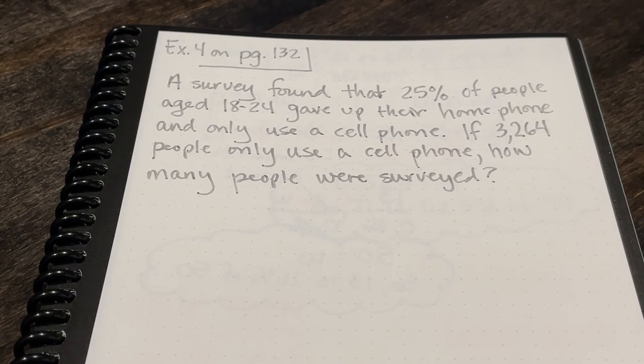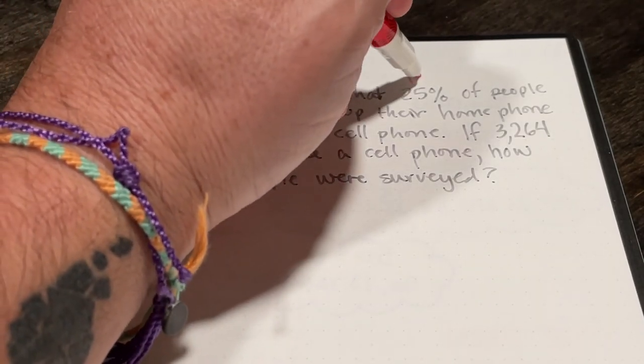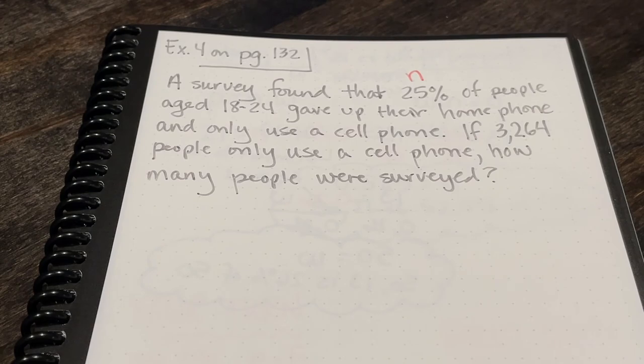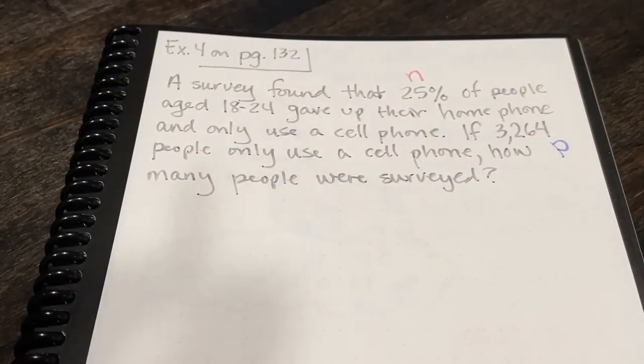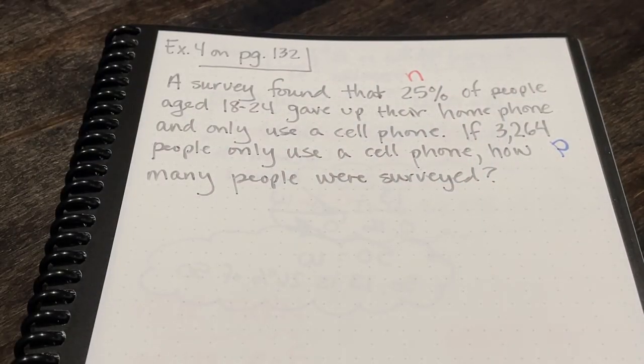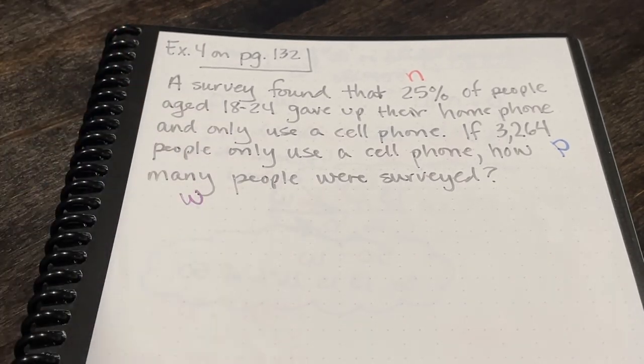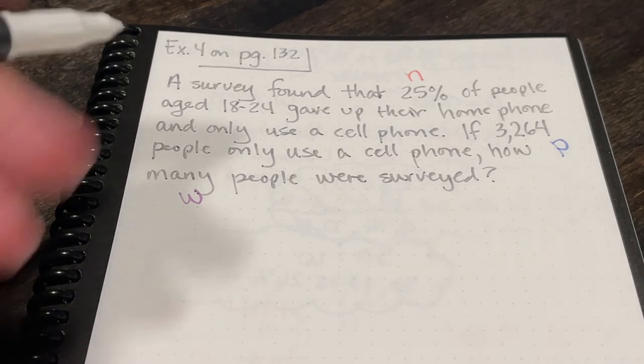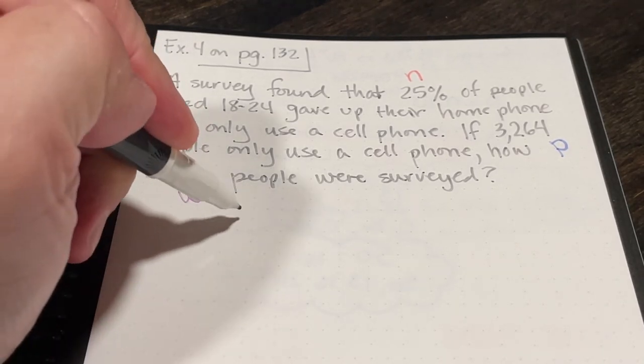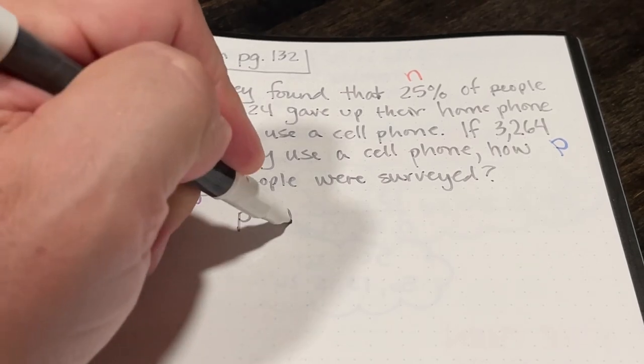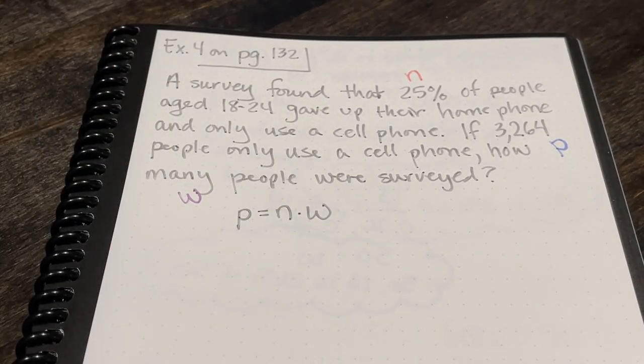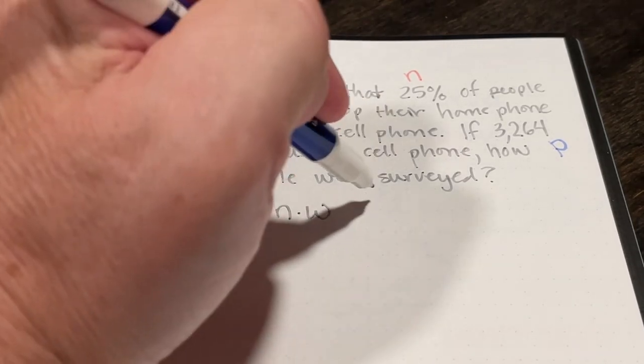In example 4 on page 132, what I want to be able to do is to pick out the percent, the part, and the whole in all of these words. Well, the percent's easy. It's 25%. Now, the number 3,264 is the part because those are the people that said that they only use a cell phone. What we want to find out is how many people in total were surveyed. So that's going to be my w. So I'll start off with the percent equation. Part equals n times w.